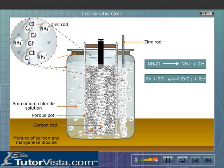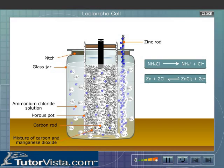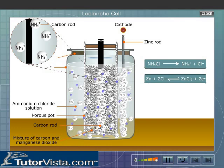The chloride ions transfer their electrons to the zinc rod, forming zinc chloride. The zinc rod attains a negative charge due to the excess of electrons. Thus, the zinc rod becomes the cathode, the negative electrode.